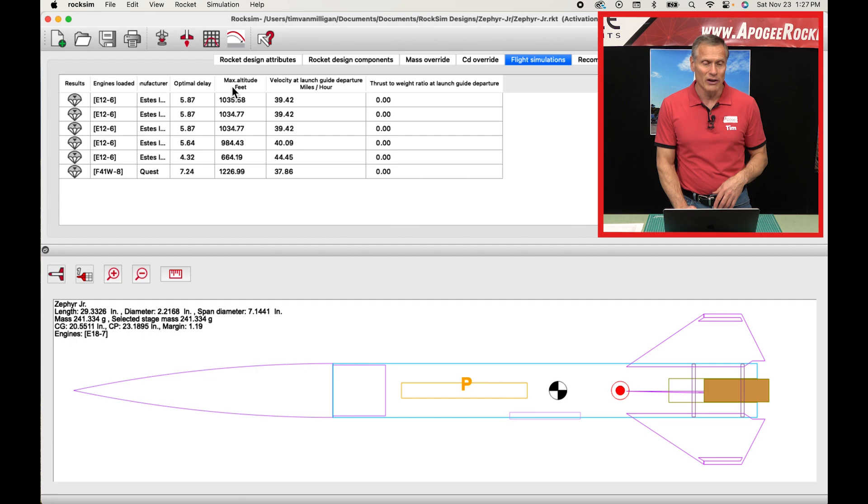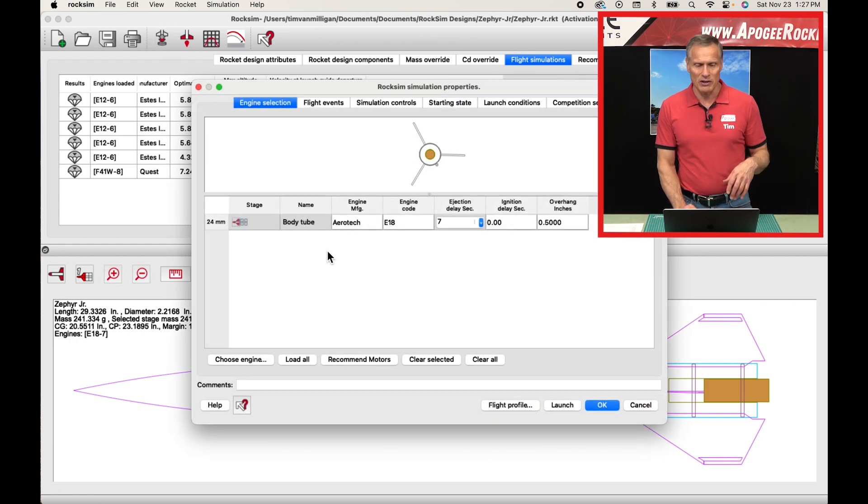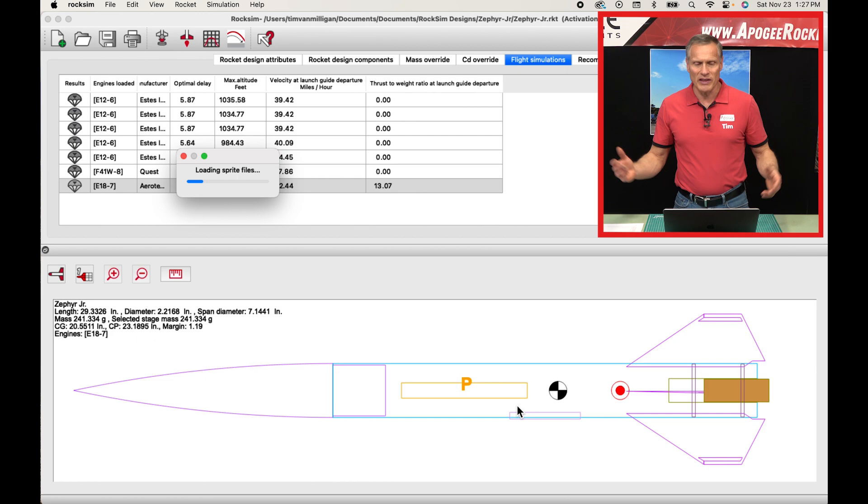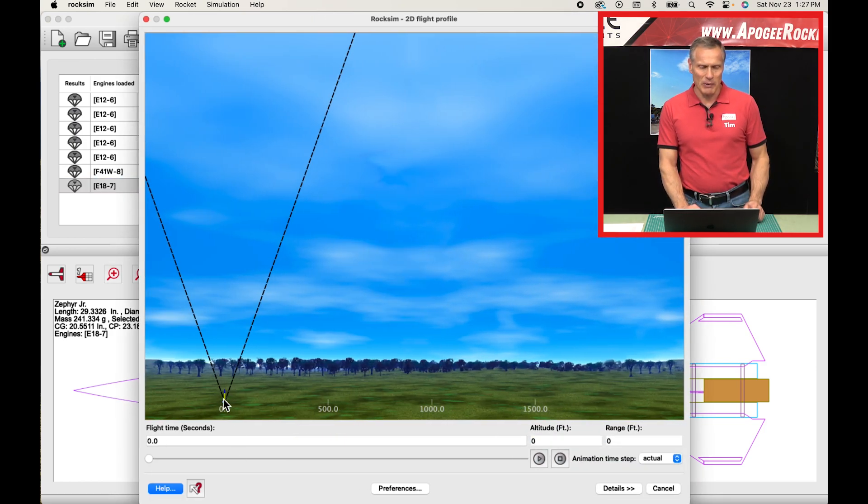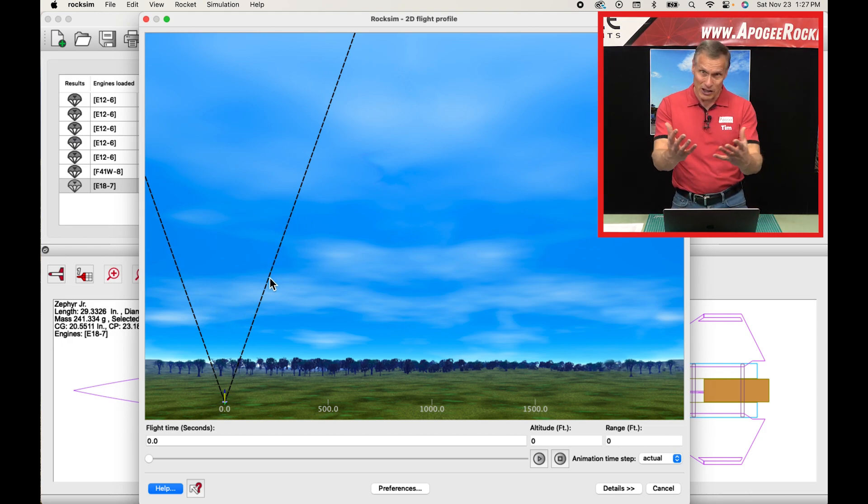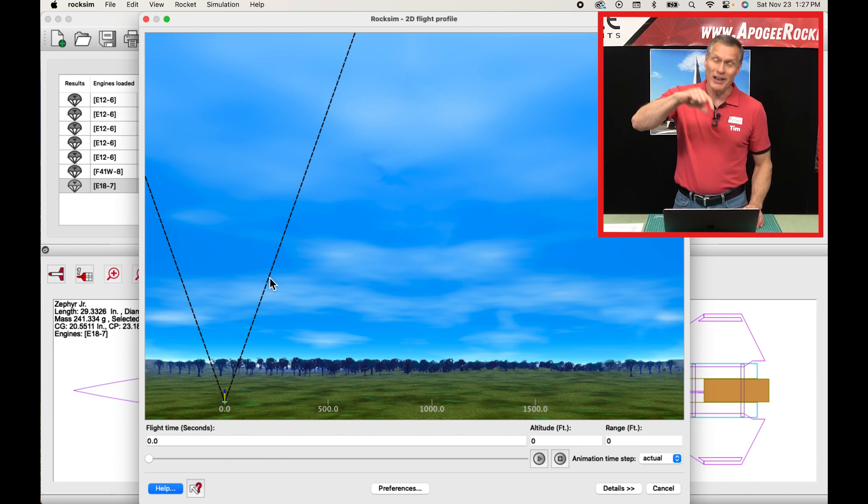Then you want to also know how high the rocket's going to fly and this will allow you to run simulations to figure that out. So I've already loaded the motor and I can just hit the launch button and it's going to run a simulation and it's going to show me what that flight profile looks like. So this is a screen of the rocket sitting on the pad and we want the rocket to stay inside of this triangle. We call it the weather cocking cone. We want the apogee point, the highest point in the flight, to stay inside of that cone.